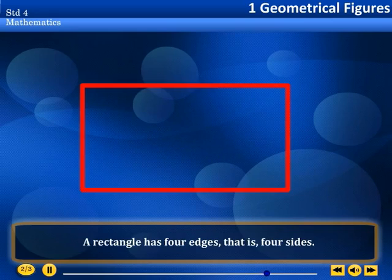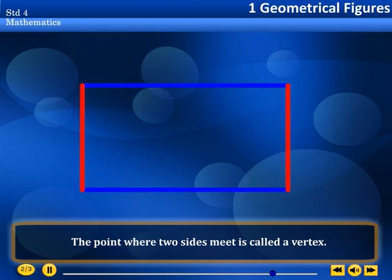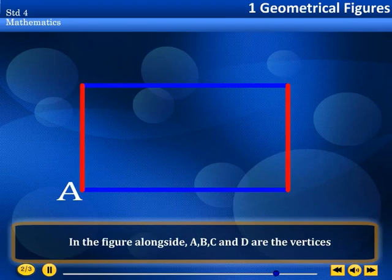Rectangle. A rectangle has four edges, that is, four sides. The point where two sides meet is called a vertex. In the figure alongside, A, B, C, and D are the vertices.